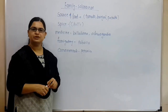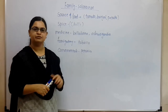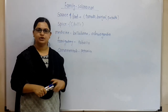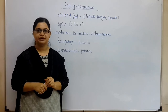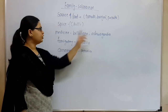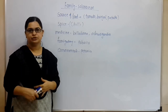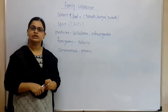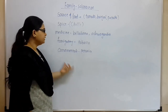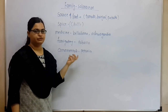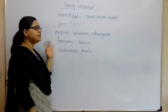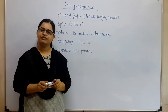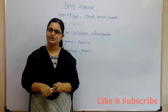For medicine: belladonna and ashwagandha — ashwagandha is well-known for boosting the immune system. Tobacco is a fumigatory example (find out what fumigatory means — that is your homework). For ornamentals: Petunia is the best example from this family as an ornamental plant. So this was all about the Solanaceae family, its economic importance and examples. If you have any doubts, let me know. See you in the next session. Thank you.